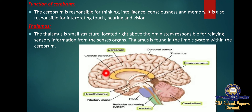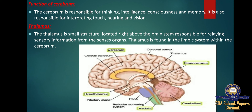The thalamus is a small structure located right above the brainstem, responsible for relaying sensory information from the sense organs — including eyes, ears, nose, and tongue. It is also responsible for transmitting motor information for movement and coordination. The thalamus is found in the limbic system within the cerebrum. The limbic system is mainly responsible for the formation of new memories and storing past experiences.